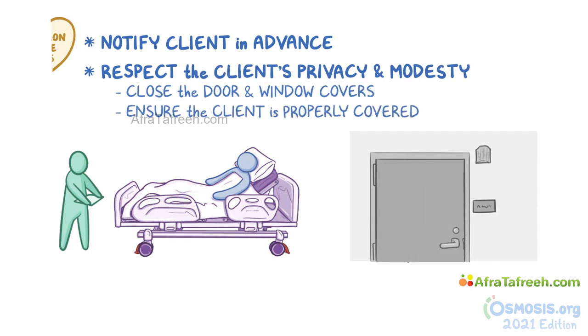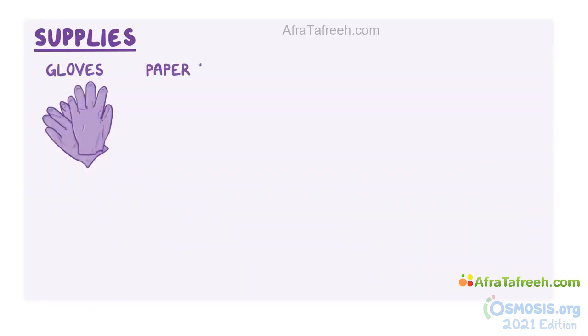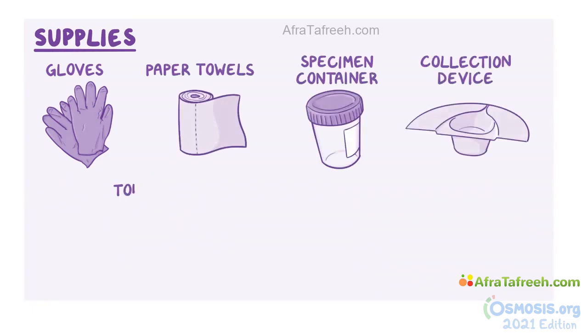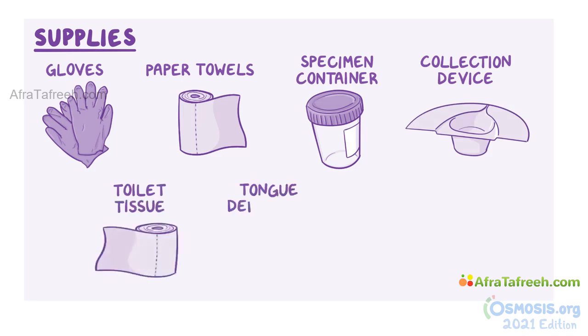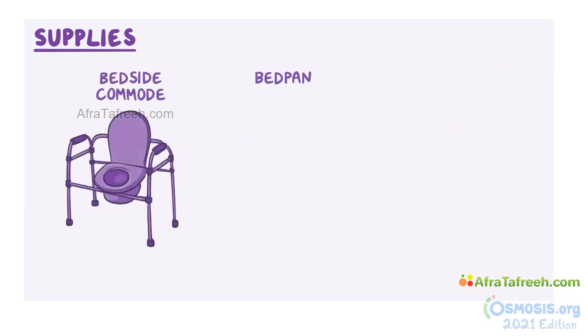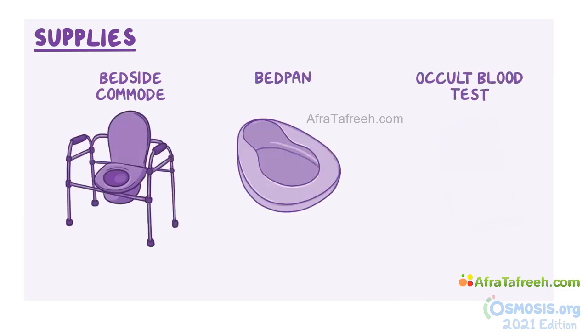When collecting a stool specimen, first gather the supplies you'll need, including gloves, paper towels, a specimen container, a collection device, toilet tissue, a tongue depressor, and a biohazard transport bag. You may also need a bedside commode, a bedpan, or an occult blood test kit.